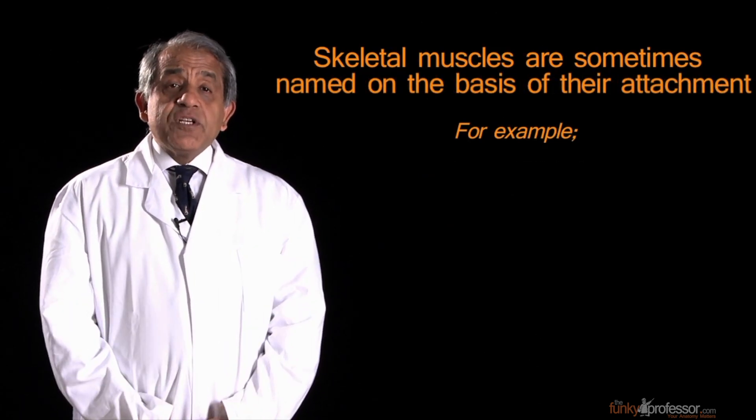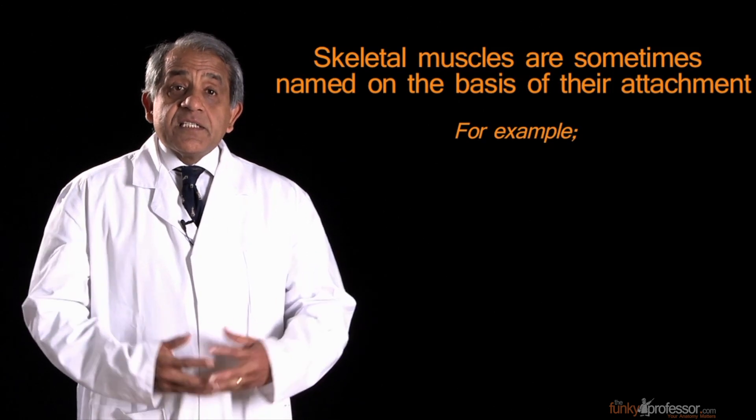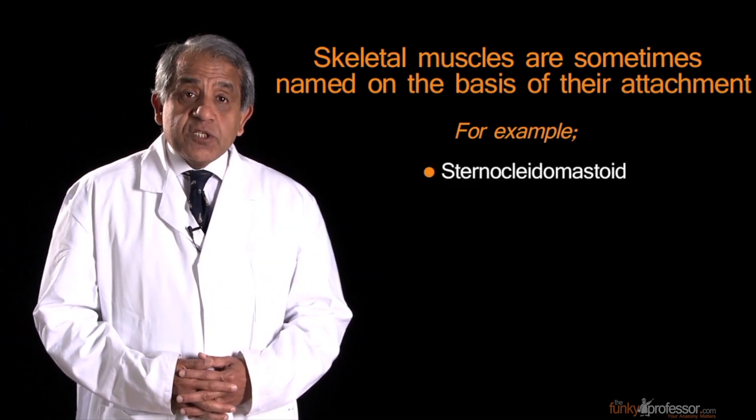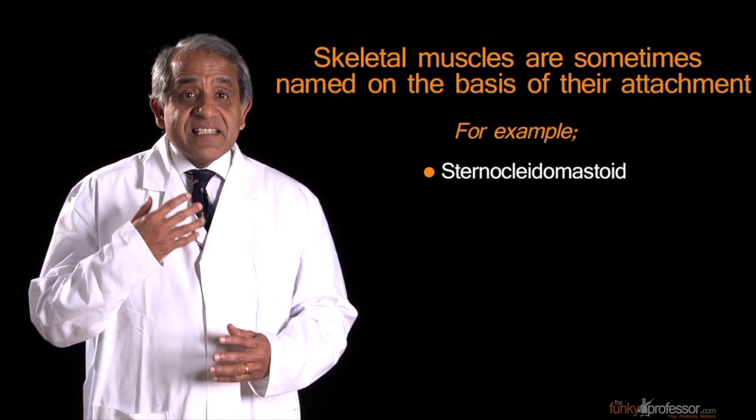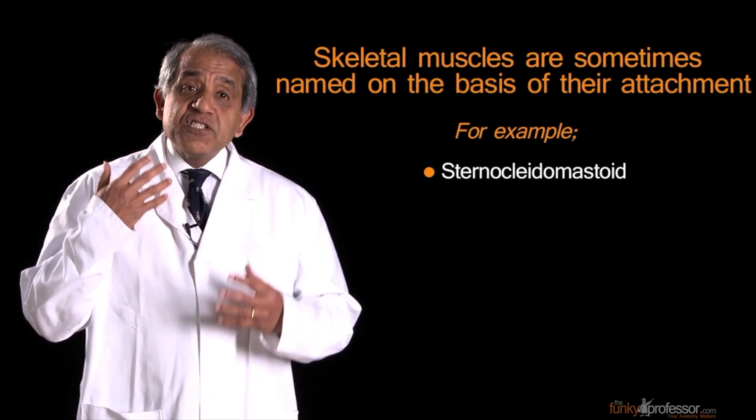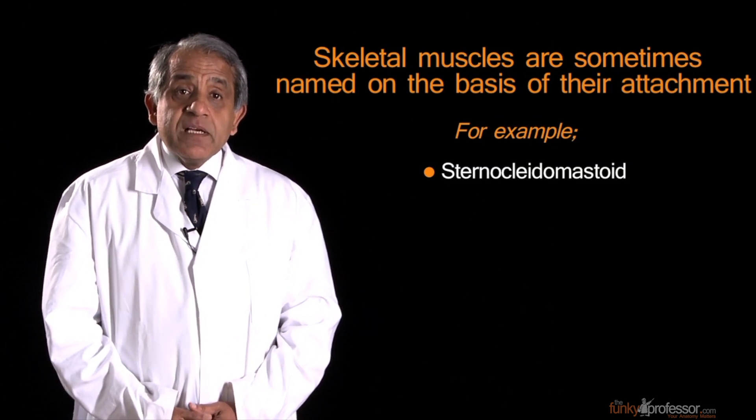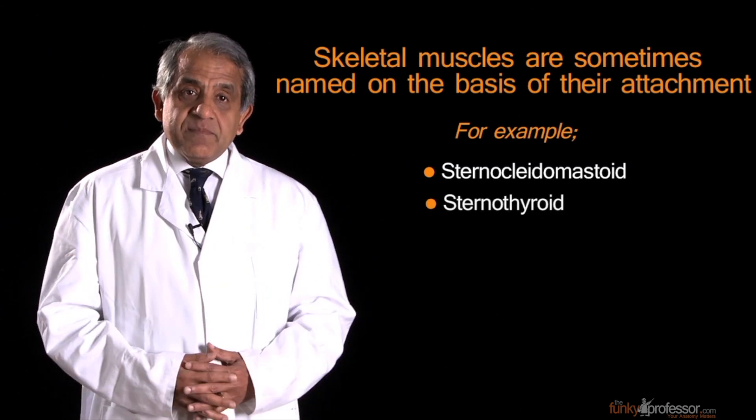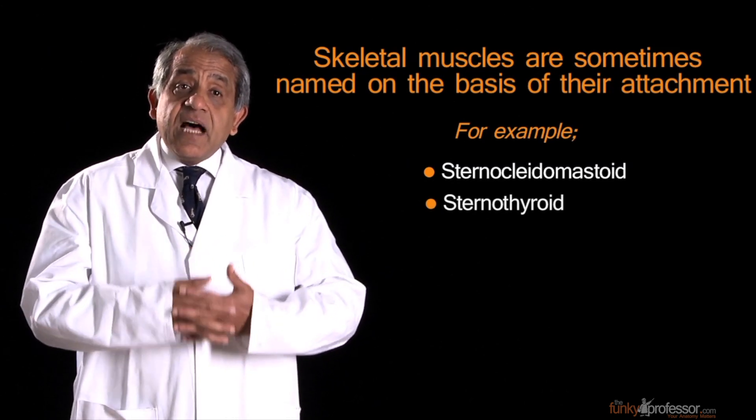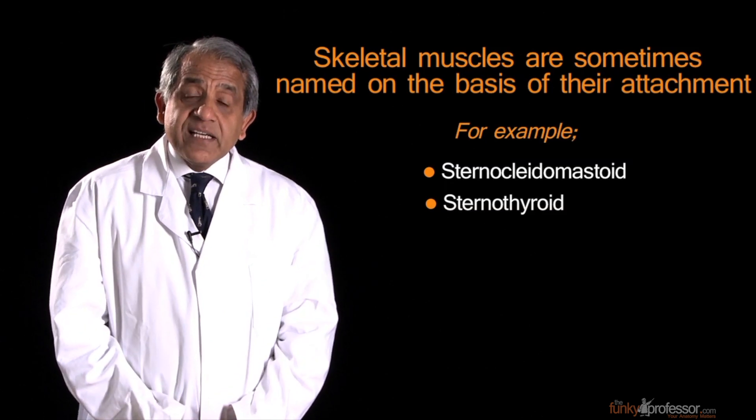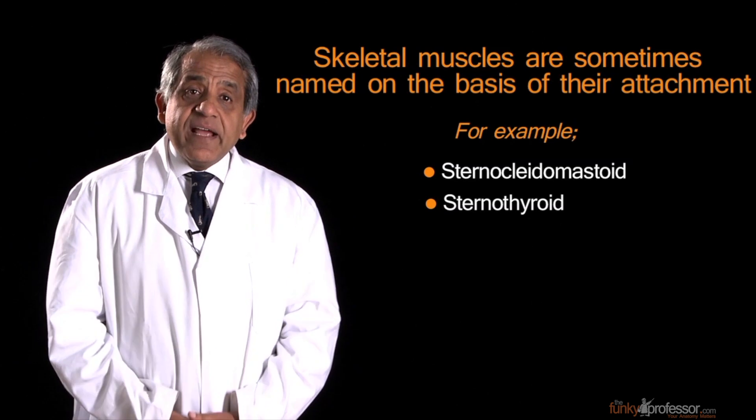And there are other muscles which are named for their attachments. Sternocleidomastoid, something of a tongue twister. It is attached to the sternum, it is attached to the clavicle and superiorly it is attached to the mastoid process in the skull base. Sternothyroid, it is attached to the sternum at its lower end and at its upper end is attached to the thyroid cartilage. So these names denote the attachments at either end of the muscle.